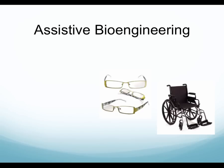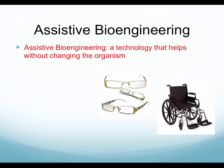The first kind of bioengineering is called assistive bioengineering. Assistive bioengineering is technology that helps without changing the organism. The root word is 'assist,' which means help — if you have an assistant, there's somebody who helps you. The key with assistive bioengineering is that it helps you without changing you.